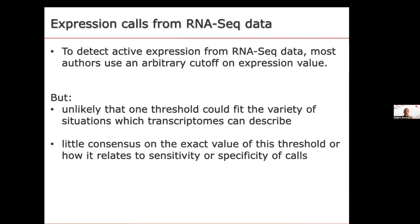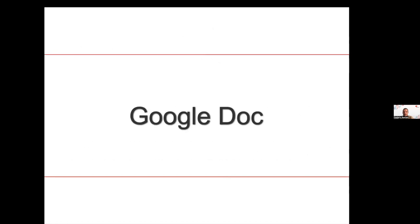I'd like to ask you to go to the Google Doc and tell me what, in your opinion, is a good threshold. The question is: in your experience, what is an appropriate threshold expression level to classify genes as actively expressed? Please provide a value and specify the units — read counts, CPM, TPM — just so we get an idea of how various this threshold can be.